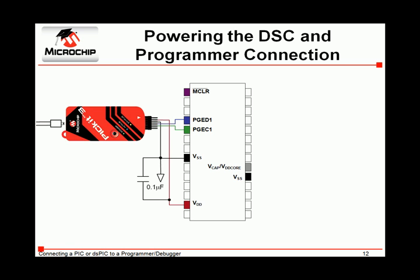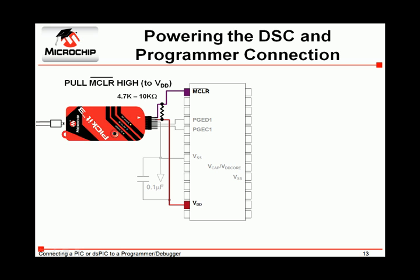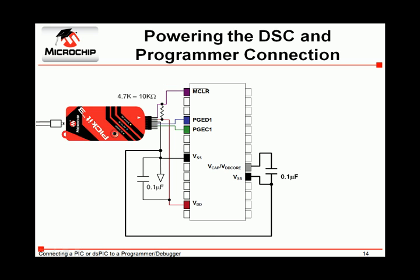Finally, the Master Clear or MCLR pin is connected. This pin is also pulled to the VDD supply voltage using a resistor. This Master Clear pin is an active low external reset for the device. Some devices will have an on-chip voltage regulator that allows lower voltage core operation to run off of a much higher VDD supply voltage in applications that operate at higher voltages. A capacitor is required to be connected to the VCAP VDD core pin on the device to help maintain stability of the regulator.